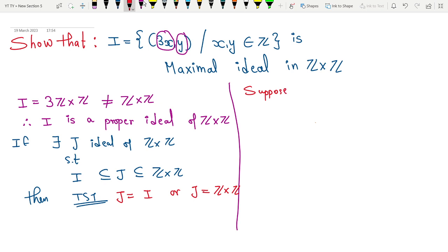Suppose there exists some J ideal of Z×Z. Since it is an ideal of Z×Z, this J must be of the form nZ×mZ. It will be of this form.